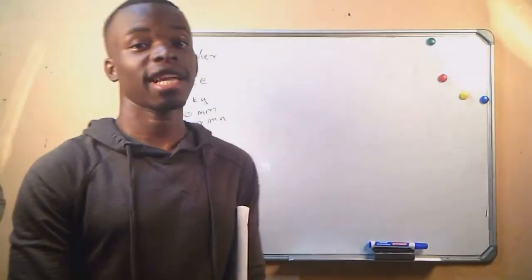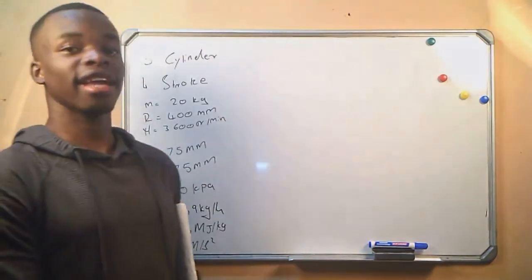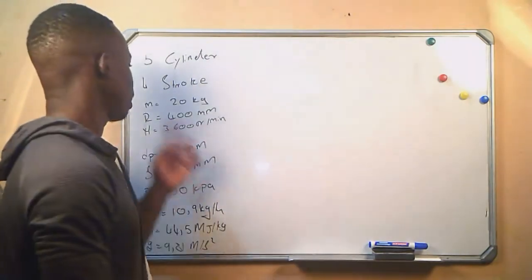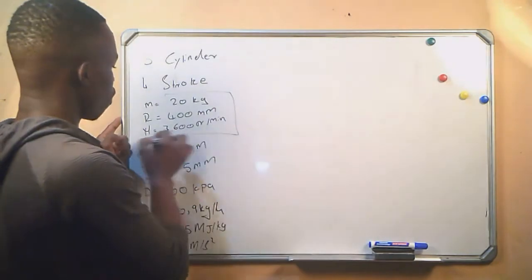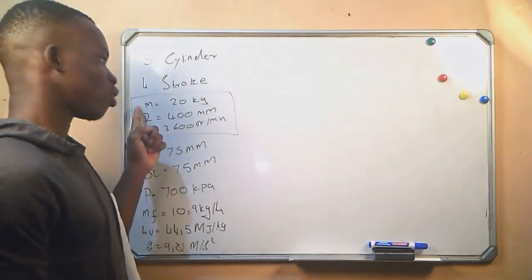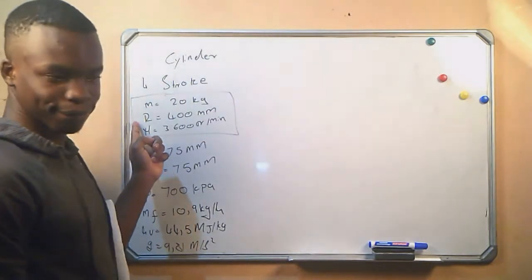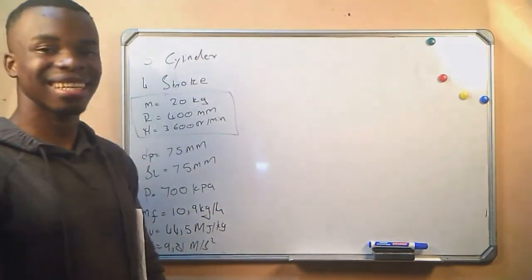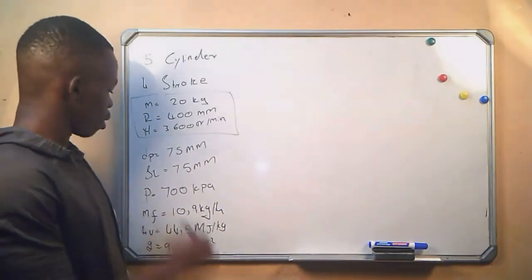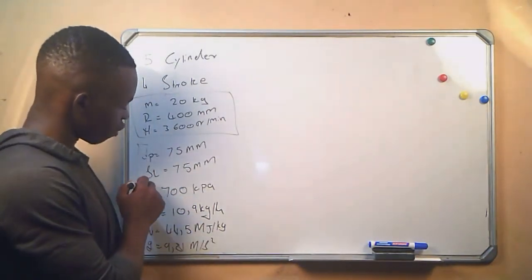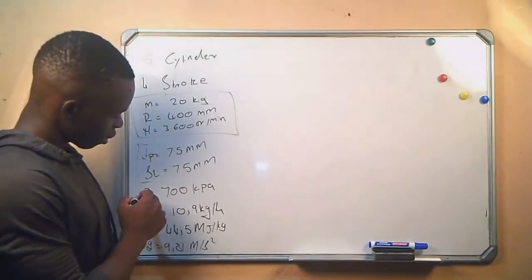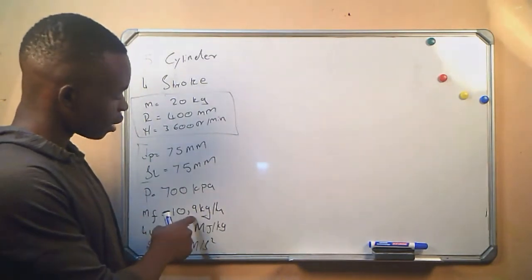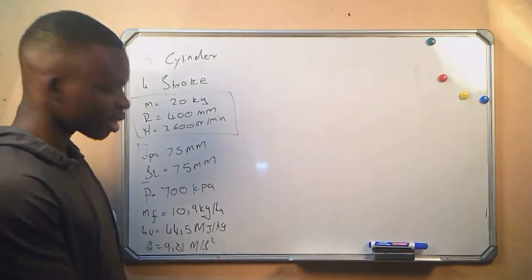This is the information that we are given. We are told that the engine is a five-cylinder four-stroke engine. The mass in the dynamometer is 20 kg, the radius is 400 millimeters, and the rotational frequency is 3600 revs per minute. This is the diameter of the piston and the stroke length. We are given the mean effective pressure, the mass of fuel which is 10.9 kg per hour, the heat value, and the gravitational acceleration.